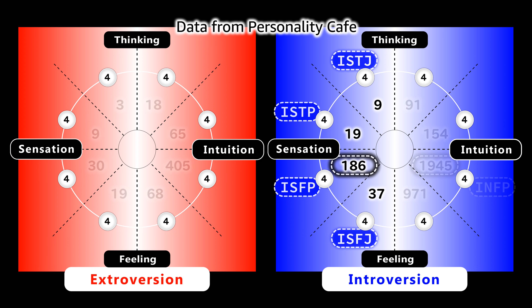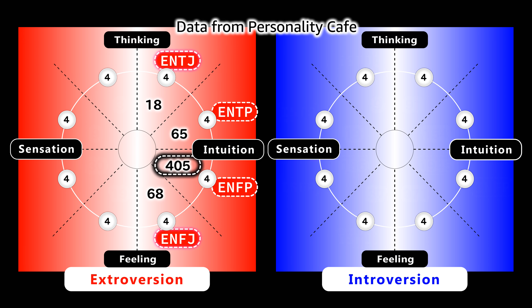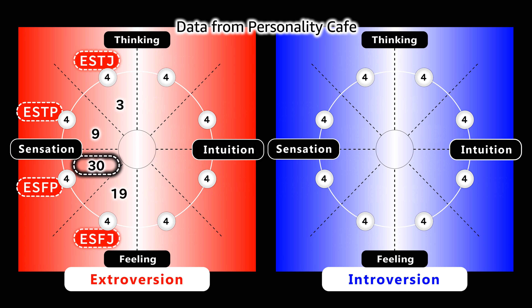Among all IS4s, ISFP Type 4 — which uses introverted feeling — has the biggest number, which is 186. Among all EN4s, ENFP Type 4 — which uses introverted feeling — has the biggest number, which is 405. Among all ES4s, ESFP Type 4 — which uses introverted feeling — has the biggest number, which is 30.